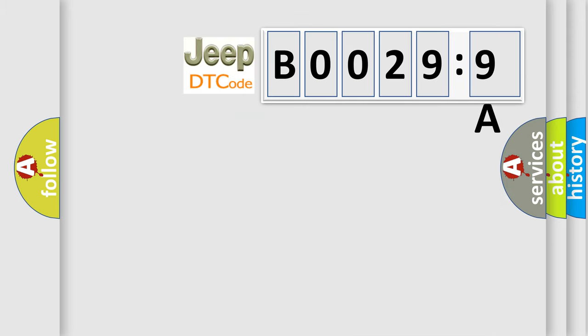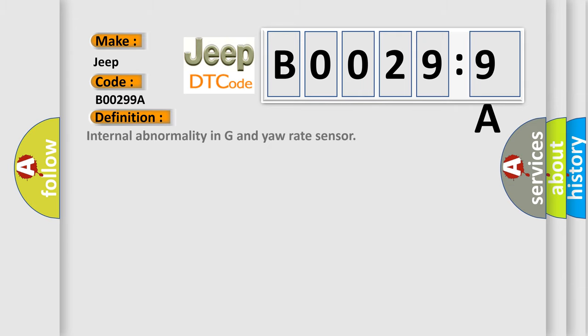So, what does the diagnostic trouble code B00299A interpret specifically for Jeep car manufacturers? The basic definition is internal abnormality in G and yaw rate sensor.